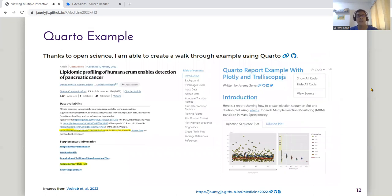Now that I have given my reasons why I use these two packages, I would like to now share some tips and resources that will help you guys to be able to give these plots by yourself. Thanks to Open Science, I am able to create a walkthrough example using Quarto, using a published lipidomic data set.